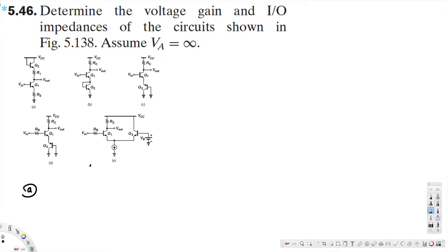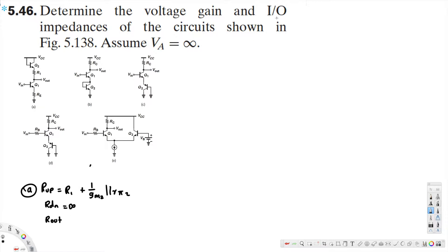Let's do part A first. We are going to calculate the output impedance. R_out_up is equivalent to R1 plus (1/gm2) parallel R52, and R_down is equal to infinity. The output impedance is R1 plus (1/gm2) parallel R52.